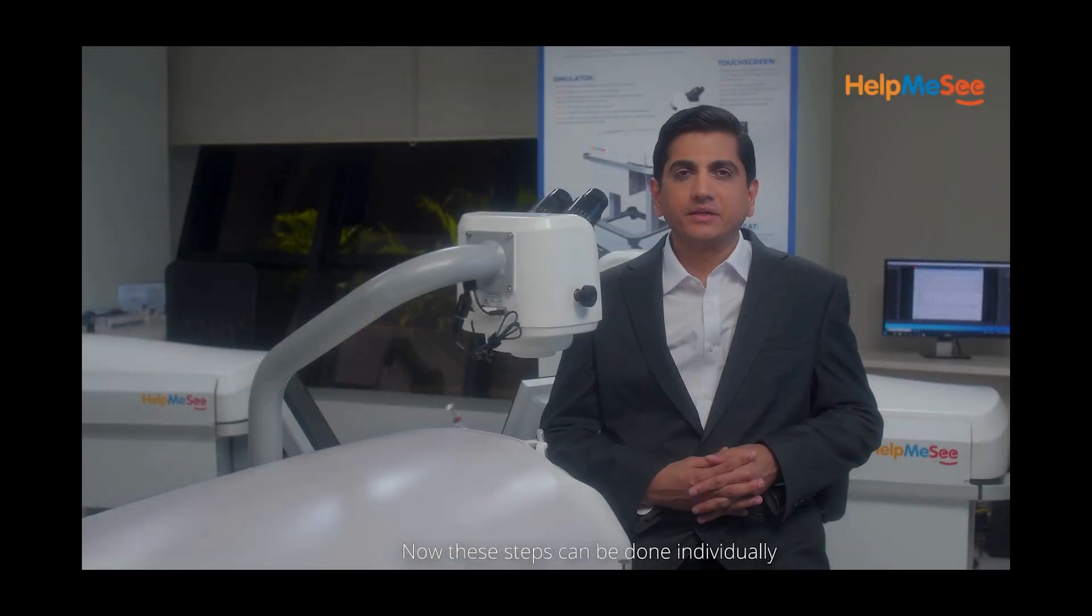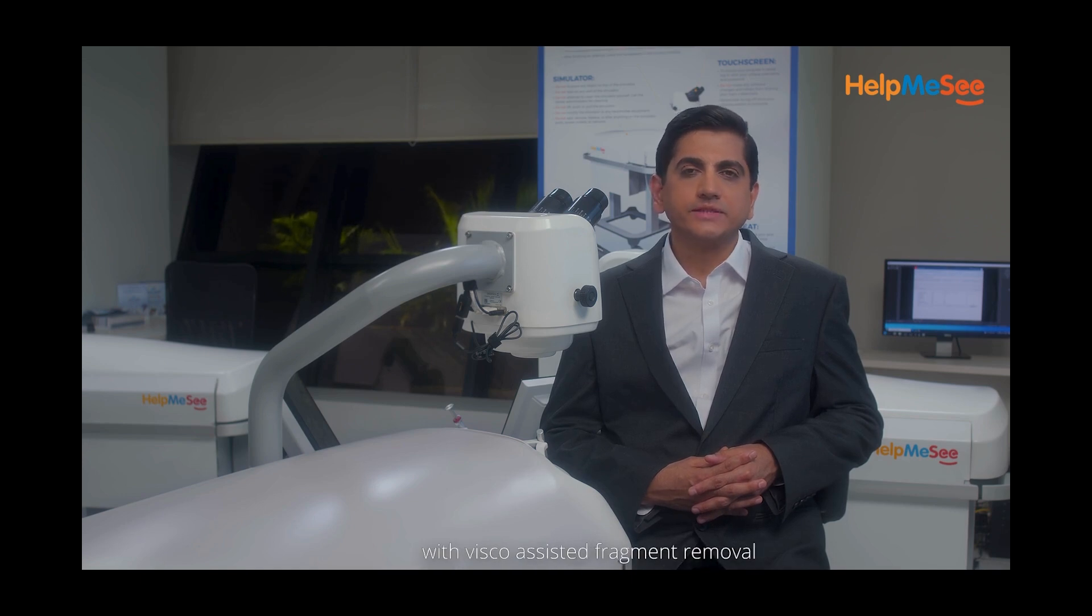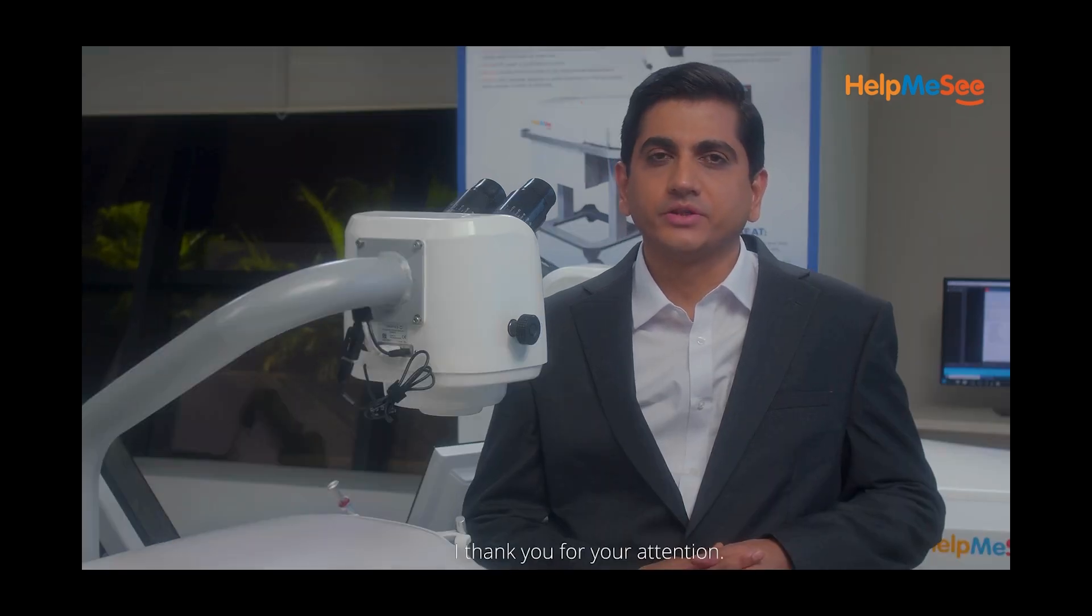Now these steps can be done individually or they can be done in a continuous fashion beginning with visco-assisted fragment removal until the end where you implant a multi-piece lens in sulcus and remove the cannula. This step will help anterior segment surgeons learn the basics of pars plana vitrectomy using the vitrectomy cutter and the irrigation cannula and clean up of the vitreous strands through the pars plana approach as well as through the limbal approach. Thank you for your attention.